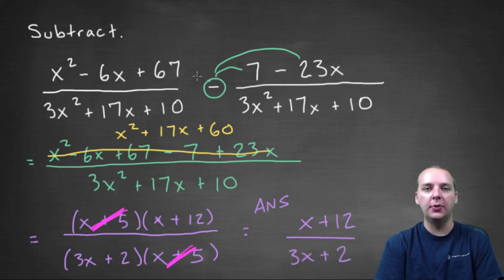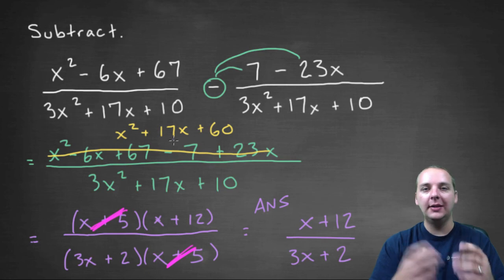So that's how we subtract two rational expressions. If you have a common denominator, the arithmetic happens in the numerator. You clean it up, combine like terms. When you're done, factor everybody, and see if you have any common factors that might be able to cancel.